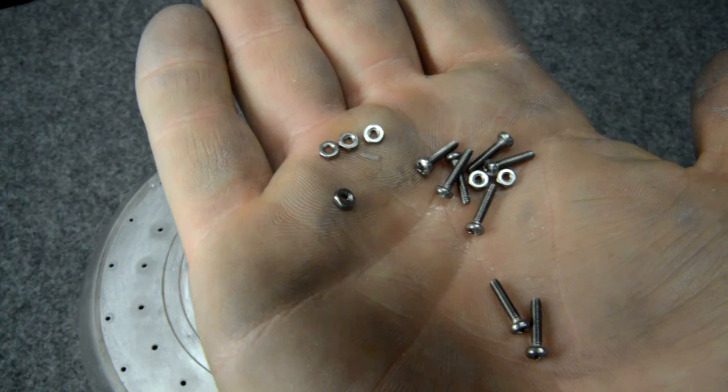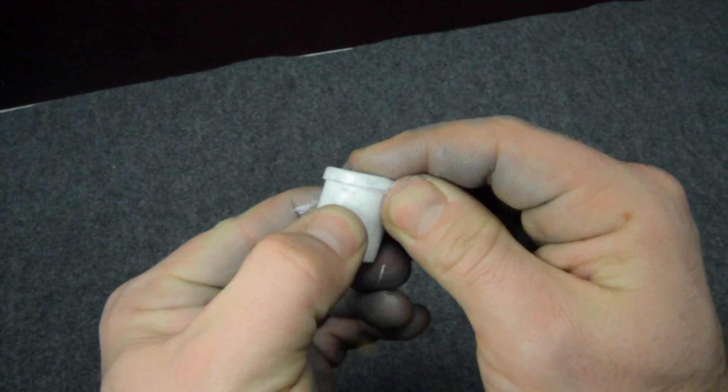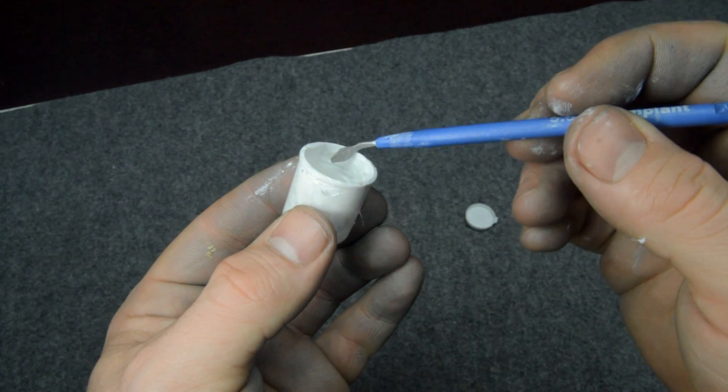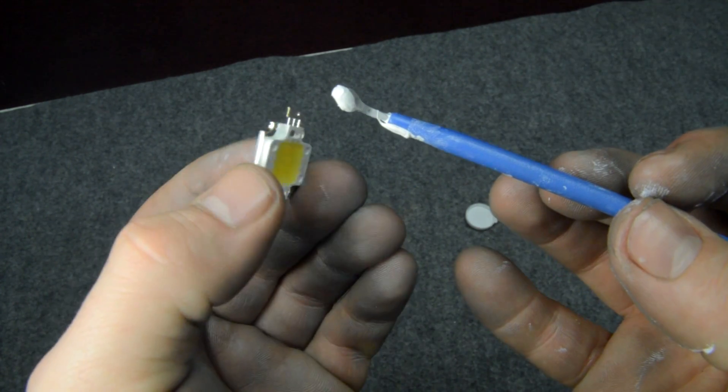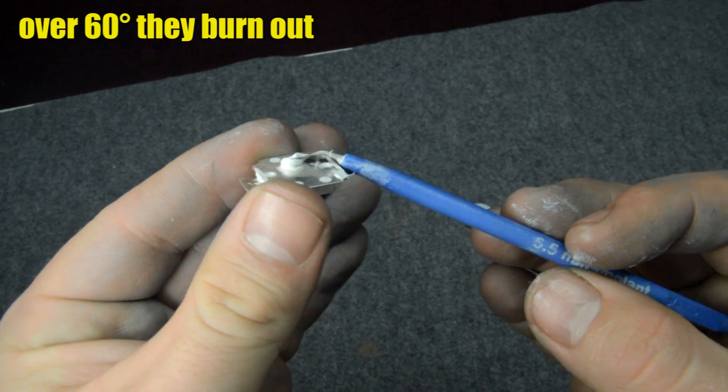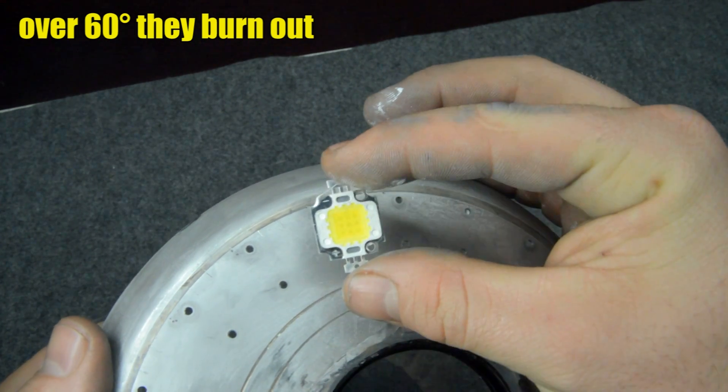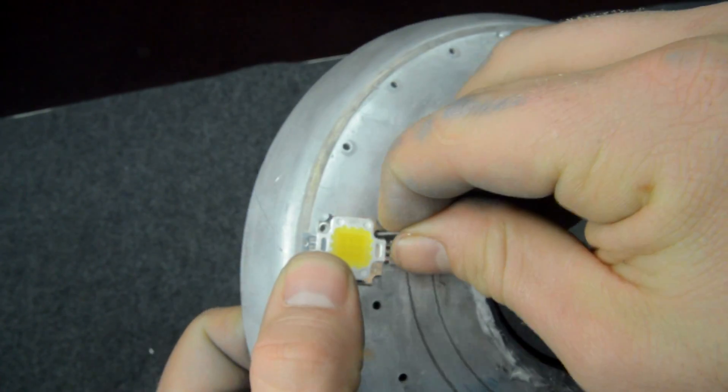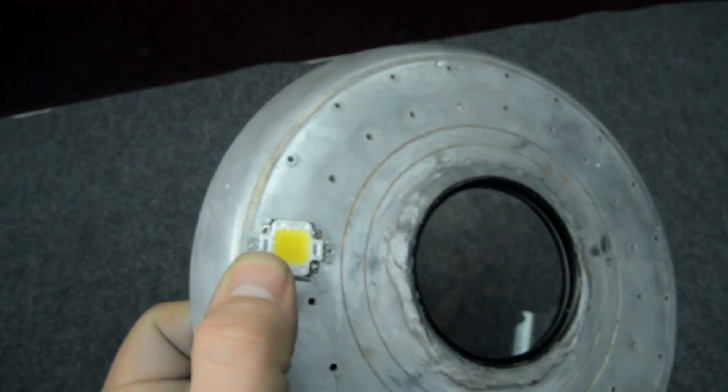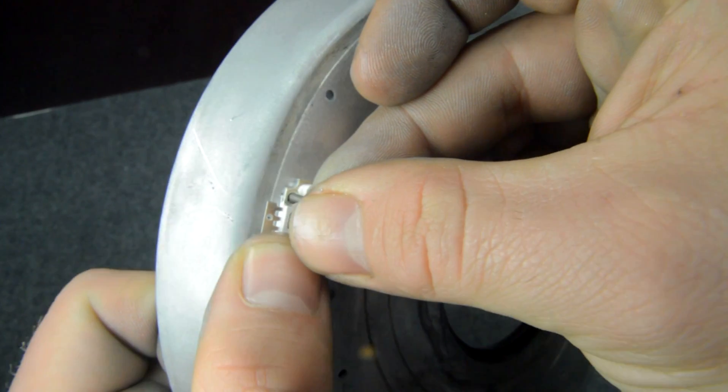Let's take now some screws and some thermal paste to secure the LEDs in place. The thermal paste is absolutely necessary because these LEDs get hot - if they go over 60 degrees probably they burn out. So I secure them on the aluminum of the pan and I secure them also with some small screws.